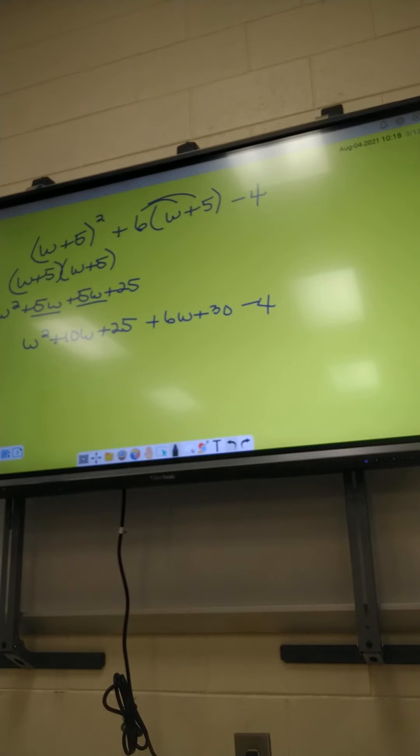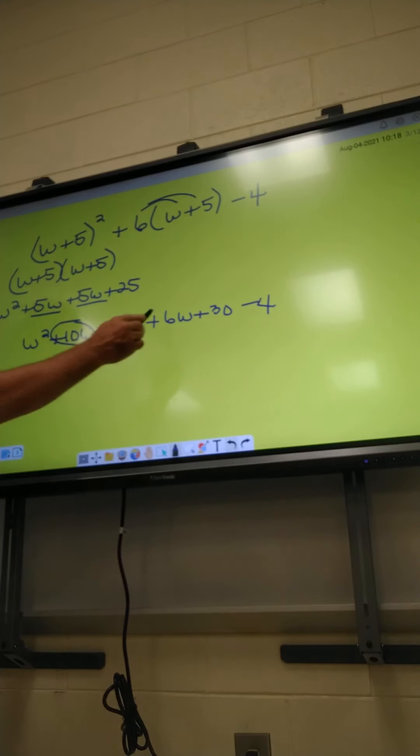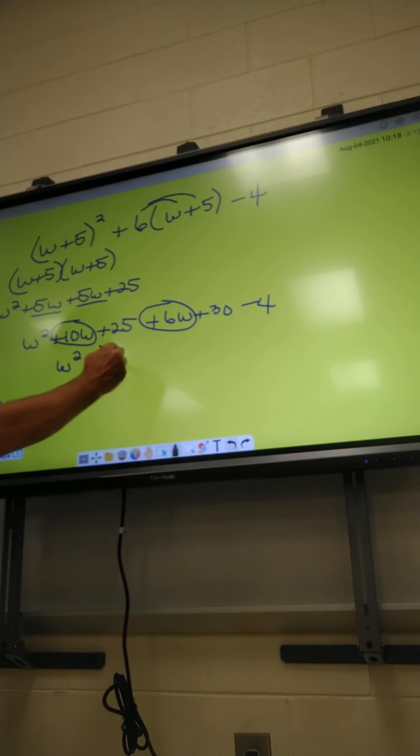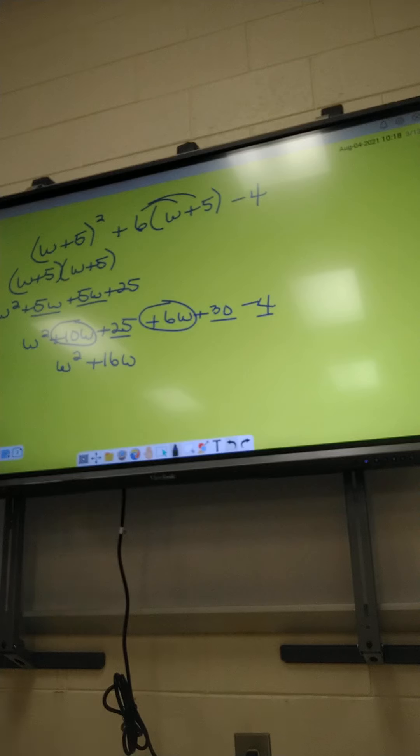Alright, so what has like terms? I've got w squared in the front. How many w's do I have? I've got this one and this one. I can add those two up and get 16. I've got a 25 plus 30 minus 4. 51.